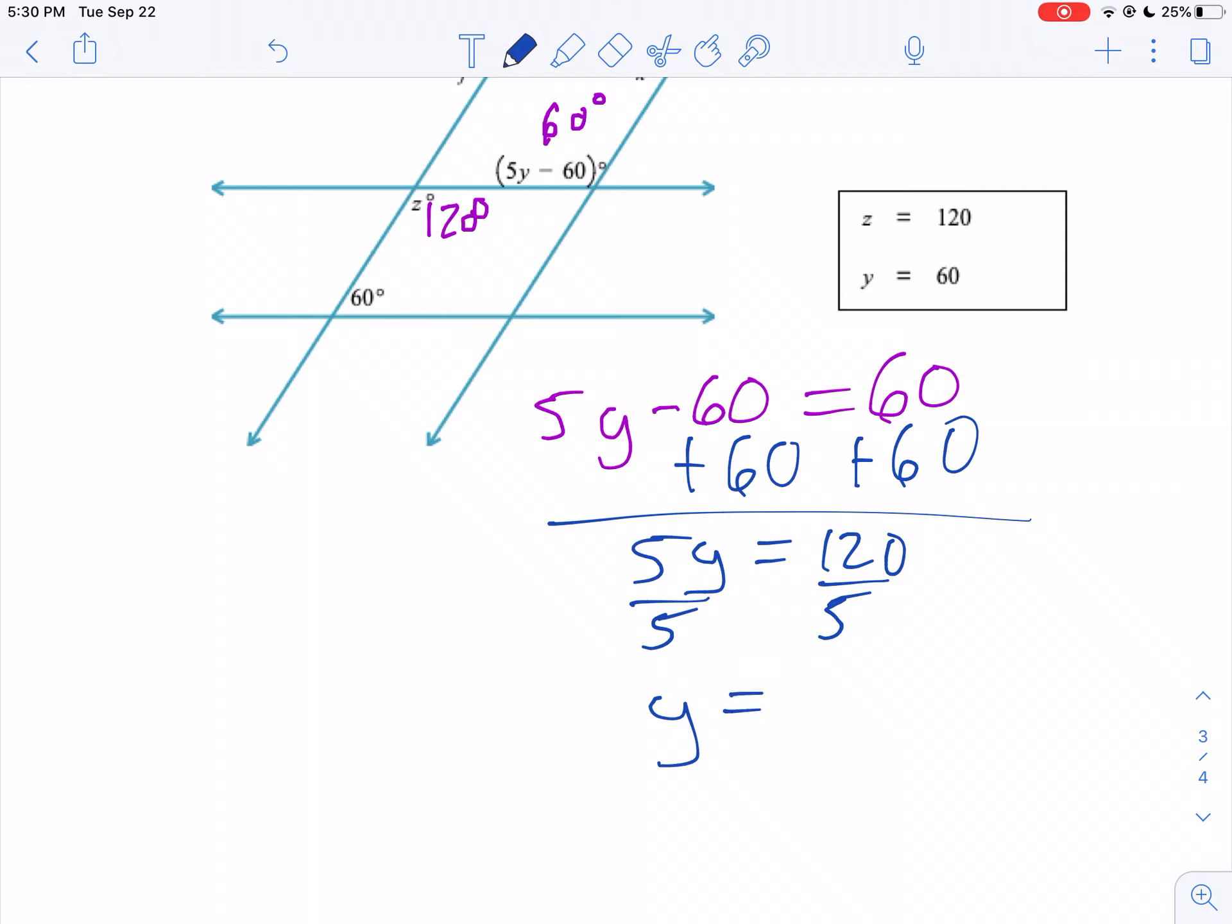And so Y is 120 divided by 5. Let me see. Well, 5 goes into 12 twice, and you've got 2 left over. 20 divided by 5 is 4, so Y is 24. Darn jet. And there's your answer.